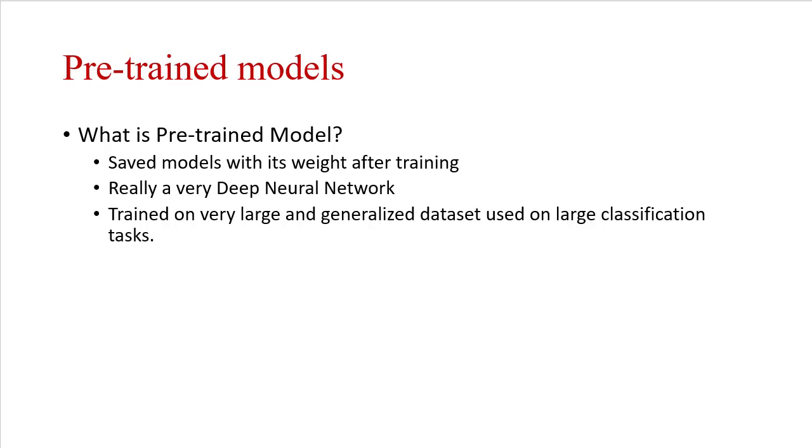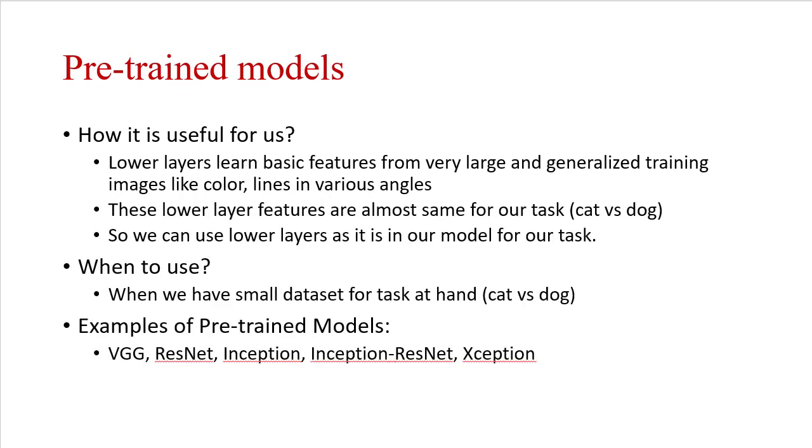How are these models useful for our task? We have seen in a previous video that lower layers of convolutional neural networks concentrate on learning important and basic features like color, lines in various angles, and so on.